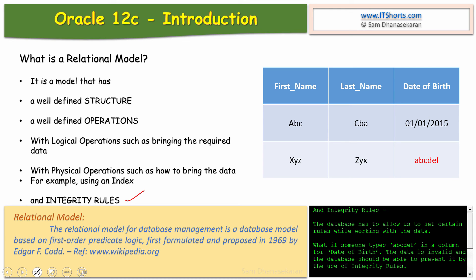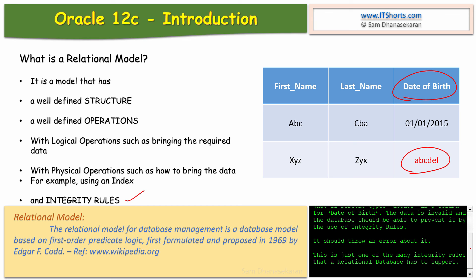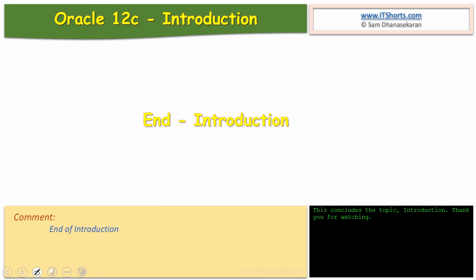The database has to allow us to set certain rules while working with the data. What if someone types 'ABCDF' in a column for date of birth? The data is invalid and the database should be able to prevent it by use of integrity rules — it should throw an error about it. This is just one of the many integrity rules that a relational database has to support. This concludes the topic introduction. Thank you for watching.